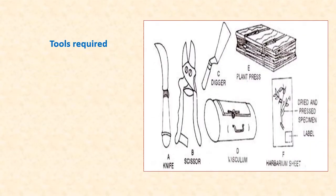The tools required at the time of specimen collection include diggers, scissors, knives, twig cutters, field notebooks, polythene bags, vasculum, needles, forceps, hand lens, old newspapers, magazines, etc.